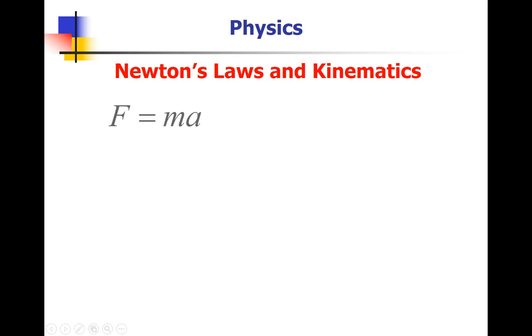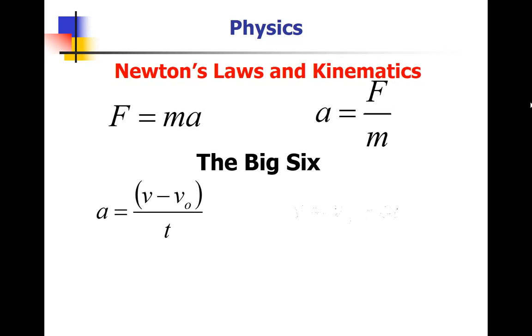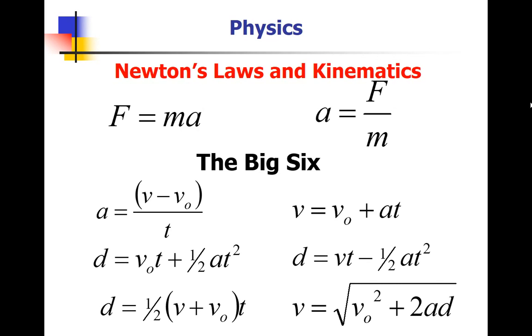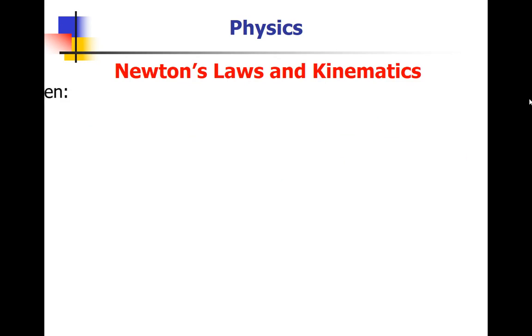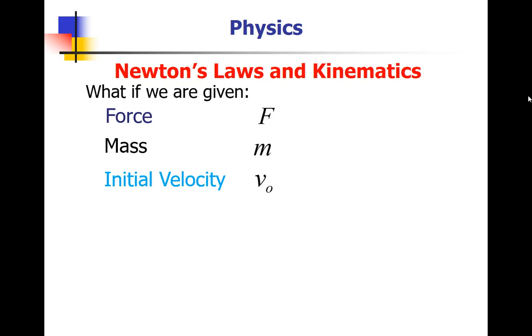And now what? Kinematics. Newton's second law, easily algebraically manipulated to solve for acceleration, and then use that acceleration in the big six equations of kinematics. Well, how will it work? What if we are given a force, a mass, an initial velocity, and a time, and told to solve for final velocity?